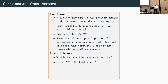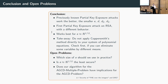Open questions include: what size of e should be used in practice if one is concerned with partial key exposure attacks? It's not clear whether e = N^(1/12) is the least secure choice. Another open problem is whether our algorithm for the Approximate GCD Multiple Problem has implications for the usual approximate GCD problem, which would be important for the security of fully homomorphic encryption over the integers and potentially for LWE, since there is a reduction from AGCD to LWE.